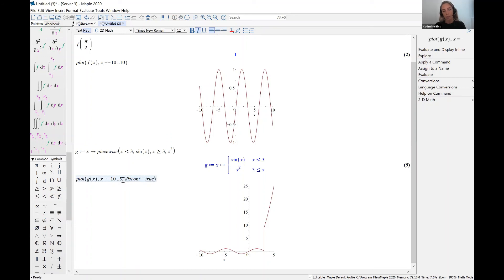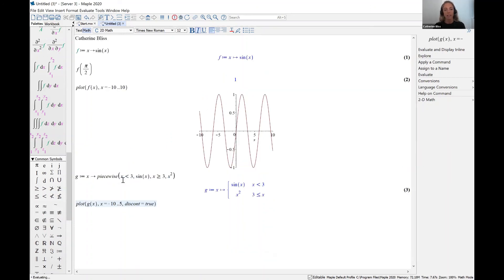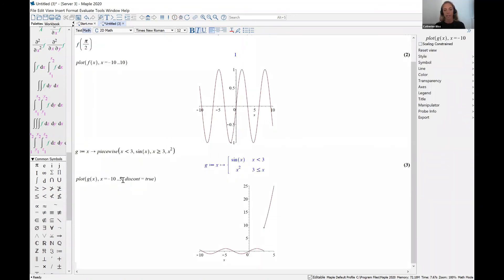In other words, we're telling Maple that this is indeed a discontinuous graph. Now we have a much better looking plot of our piecewise function.